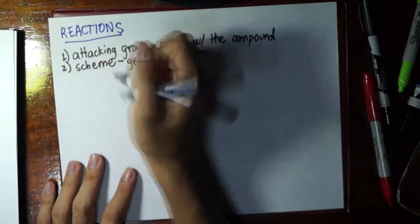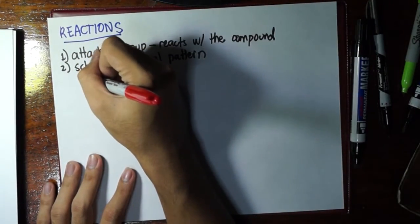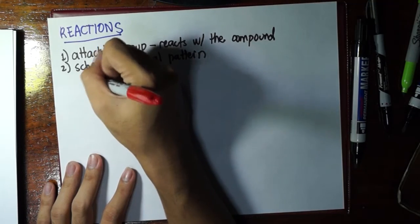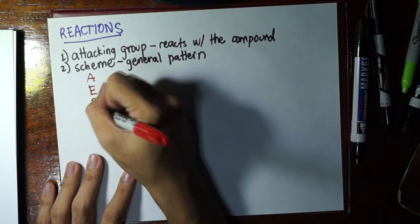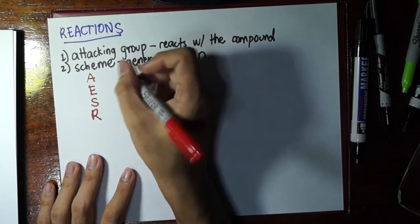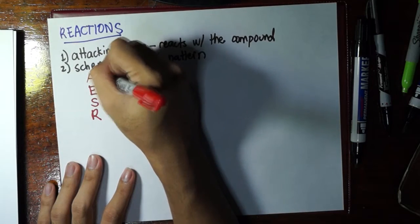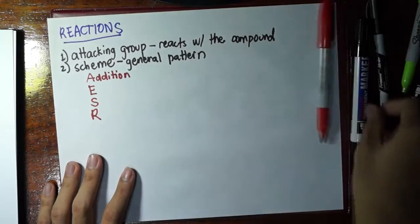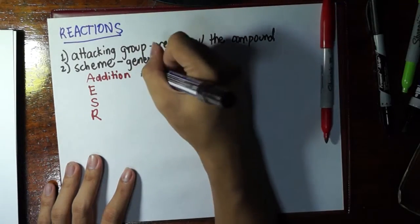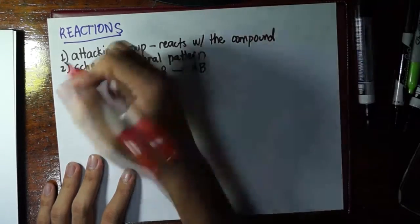So I think the scheme is quite easier to describe. So we have four types. Actually, three of these are real schemes. The fourth is quite different. So let's go through this one by one. The first letter A is addition. And in addition, the format is A plus B yields AB, just like synthesis in general chemistry.